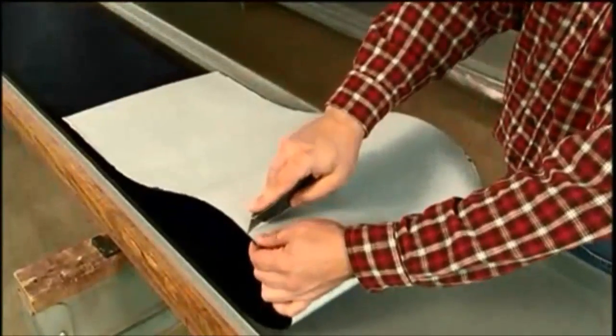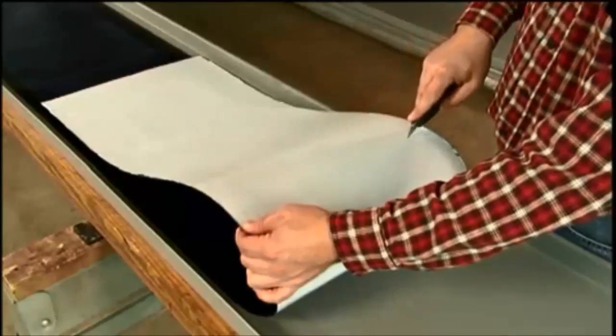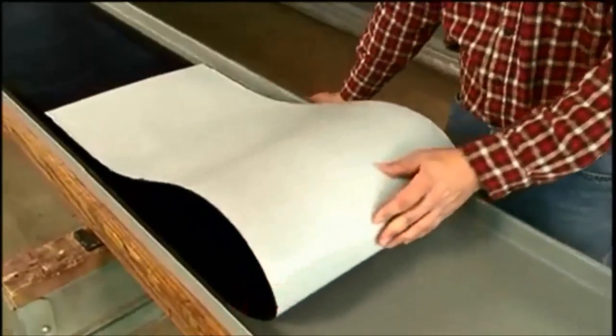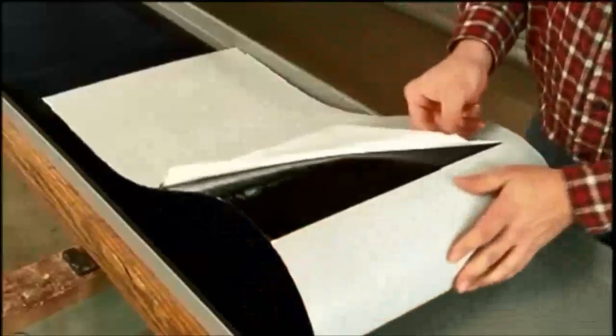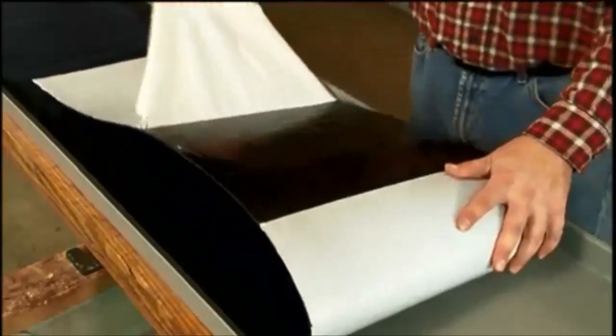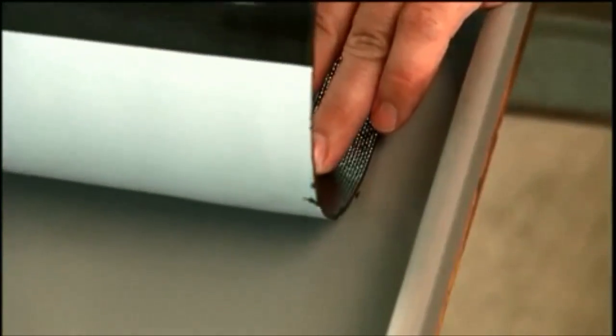Lightly score the release paper across its width, taking care not to score the adhesive itself. Remove the short length of paper and very carefully adhere this section of laminate to the panel using the pencil marks as guides.